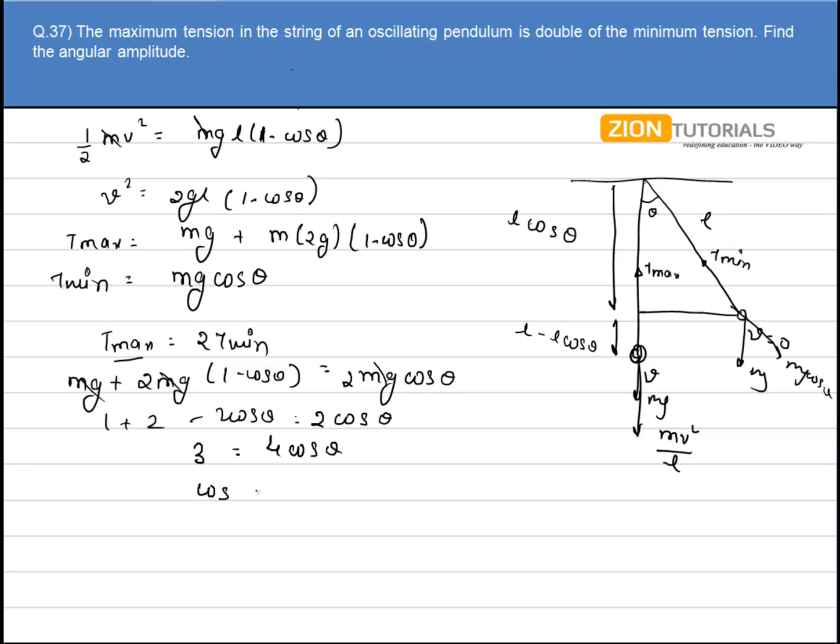So cos theta comes out to be 3 by 4. That is the answer. Theta will be equal to cos inverse of 3 by 4. That is the angular amplitude.